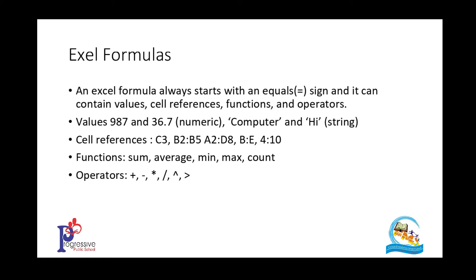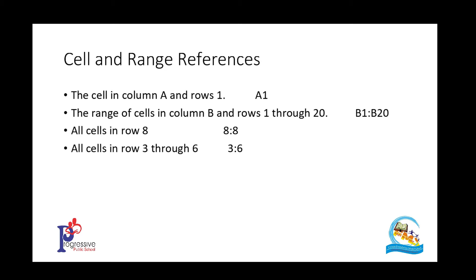Cell and range references: The cell in column A and row 1 is A1. As I explained before, a cell is a combination of row and column. A range of cells in column B from row 1 through 20 is B1:B20. The colon in between indicates the range connecting these two cells.